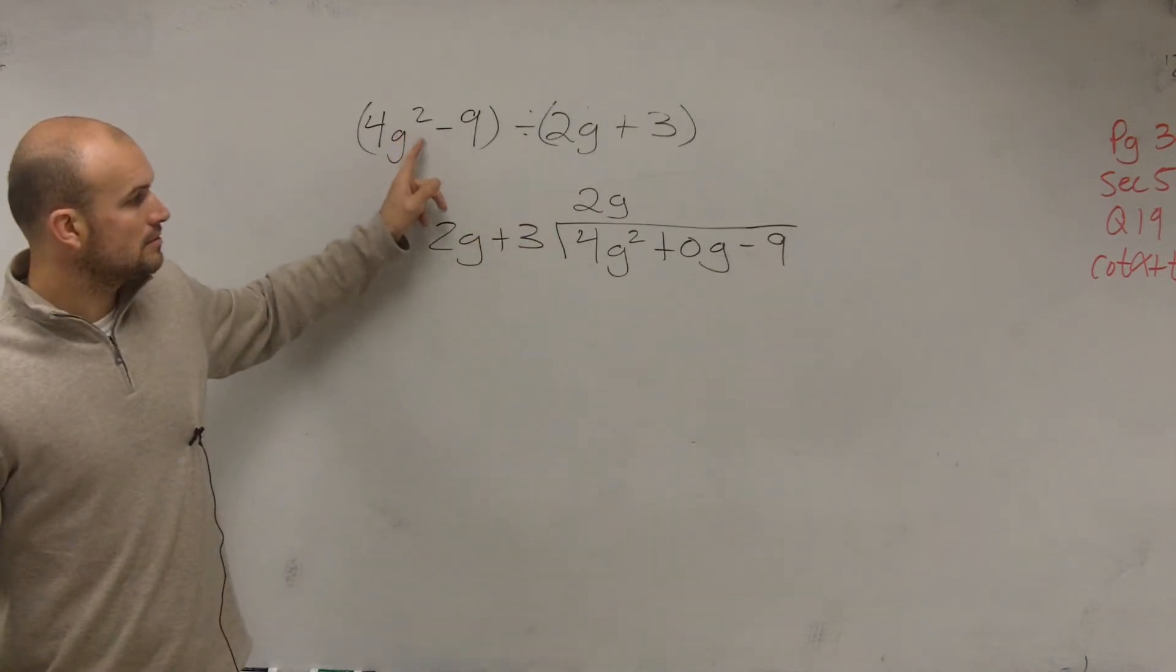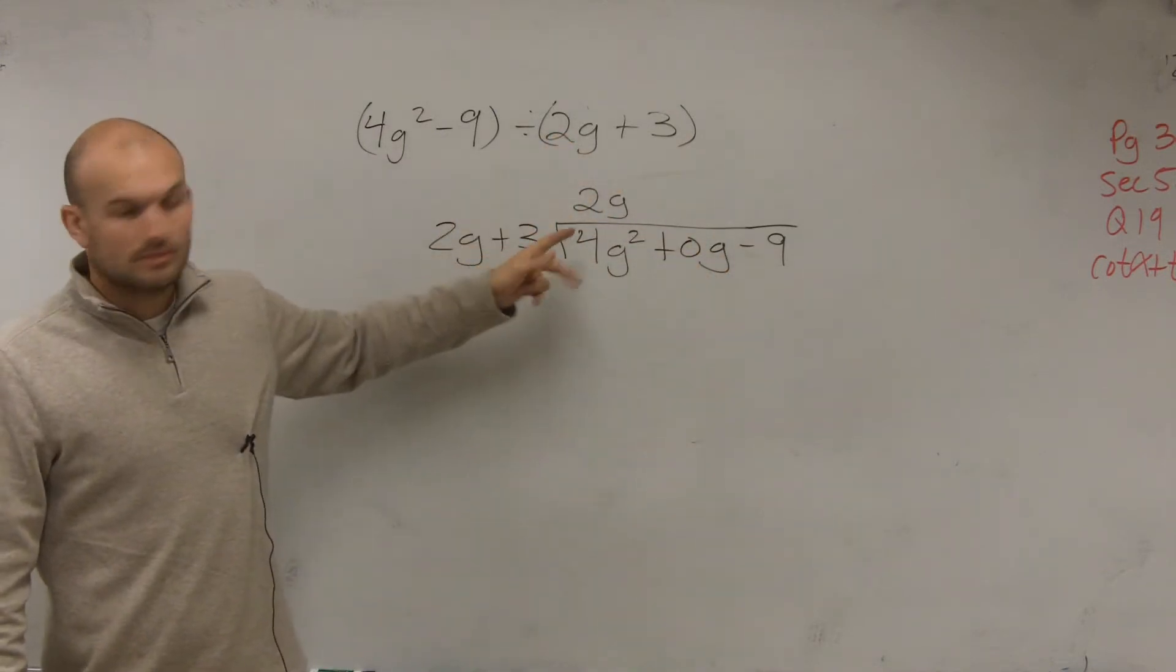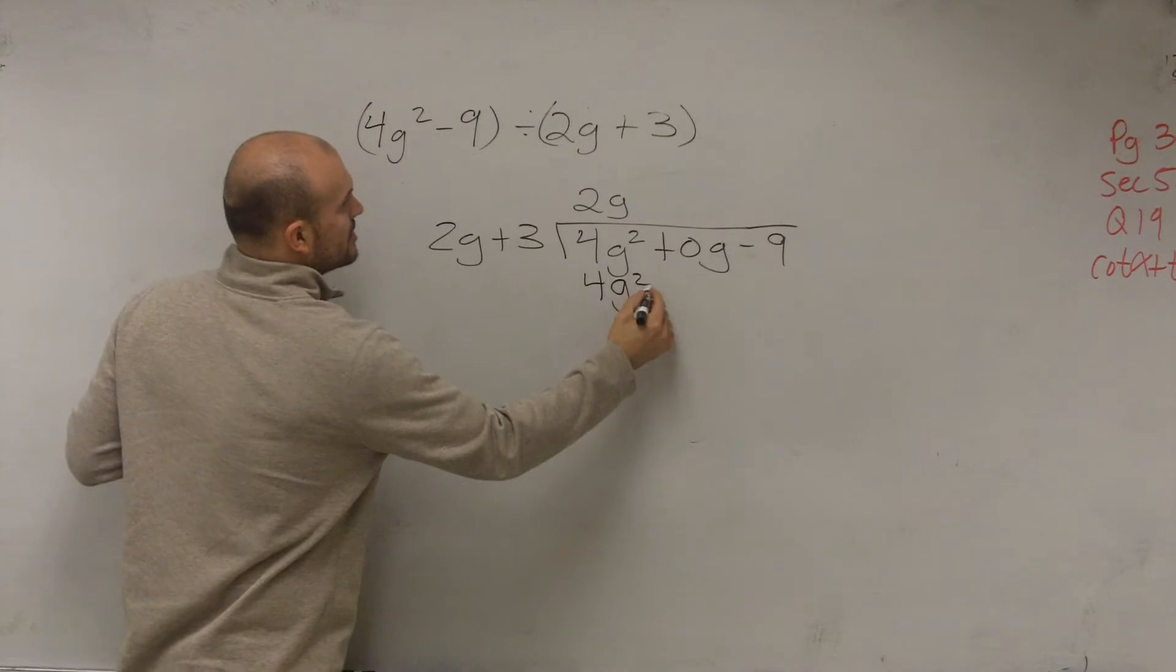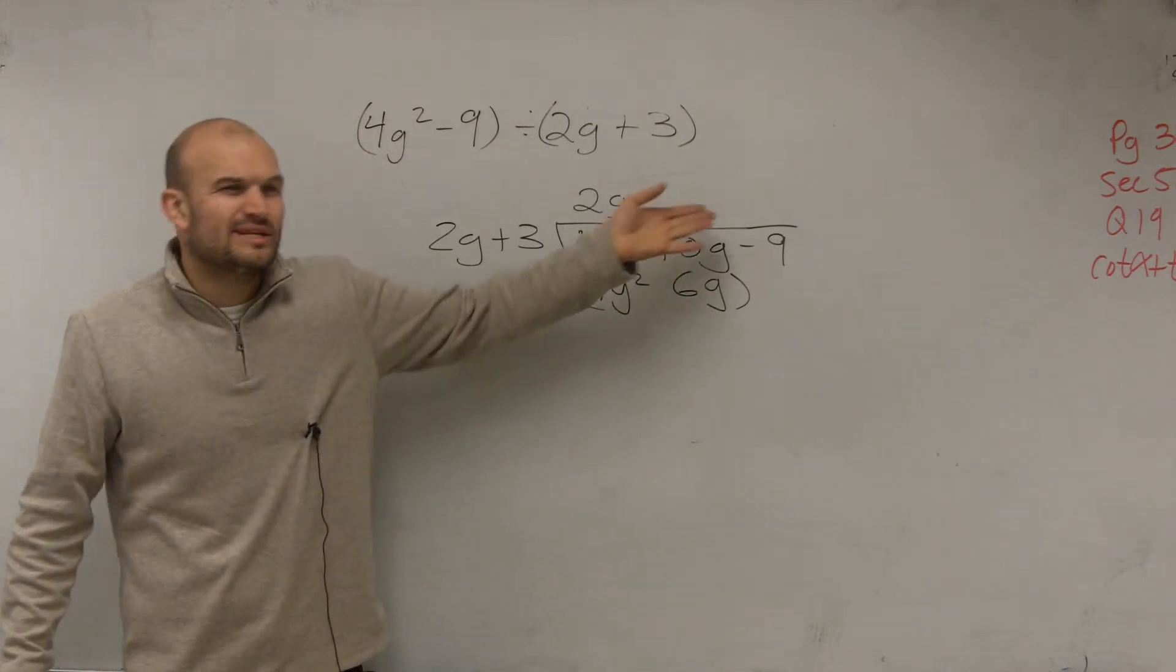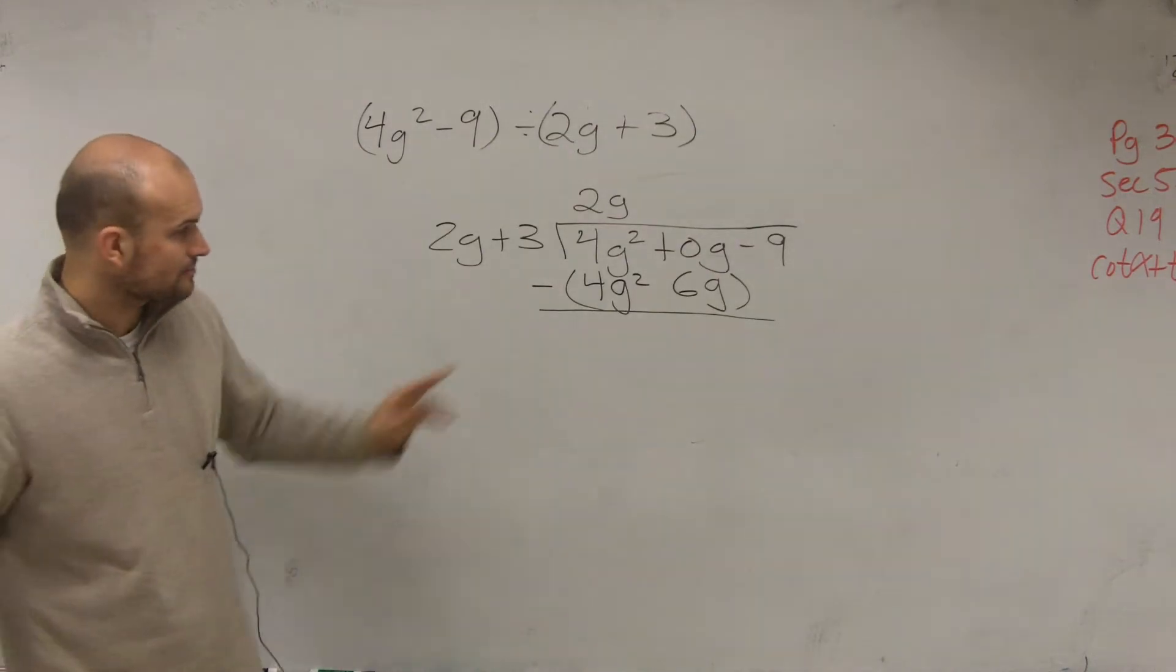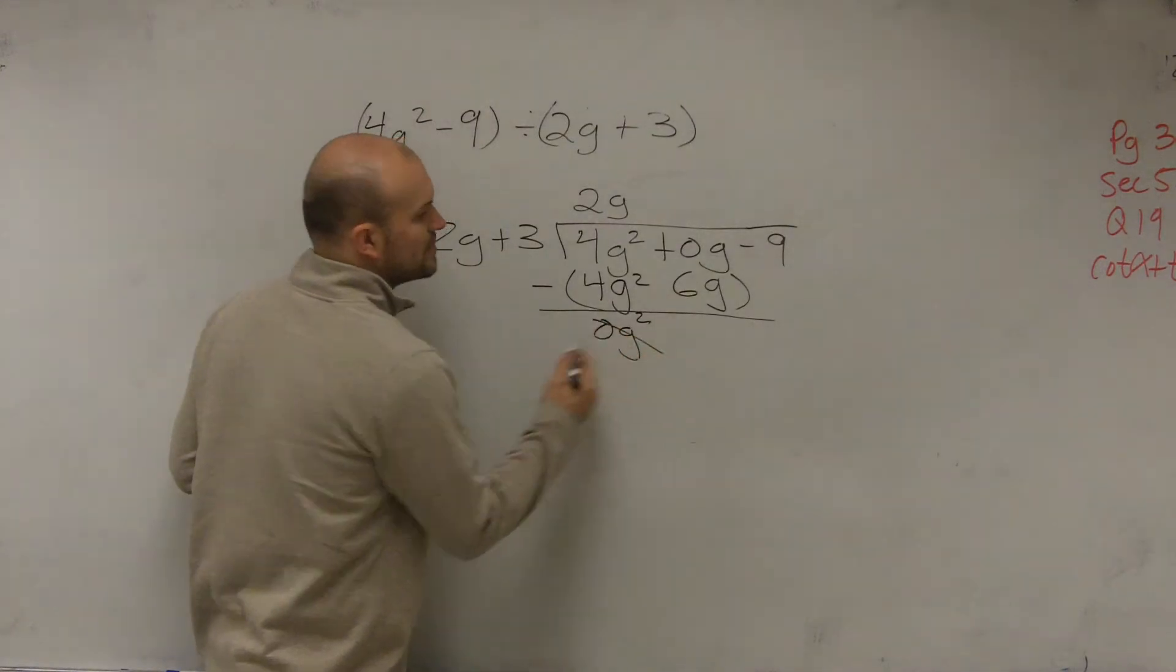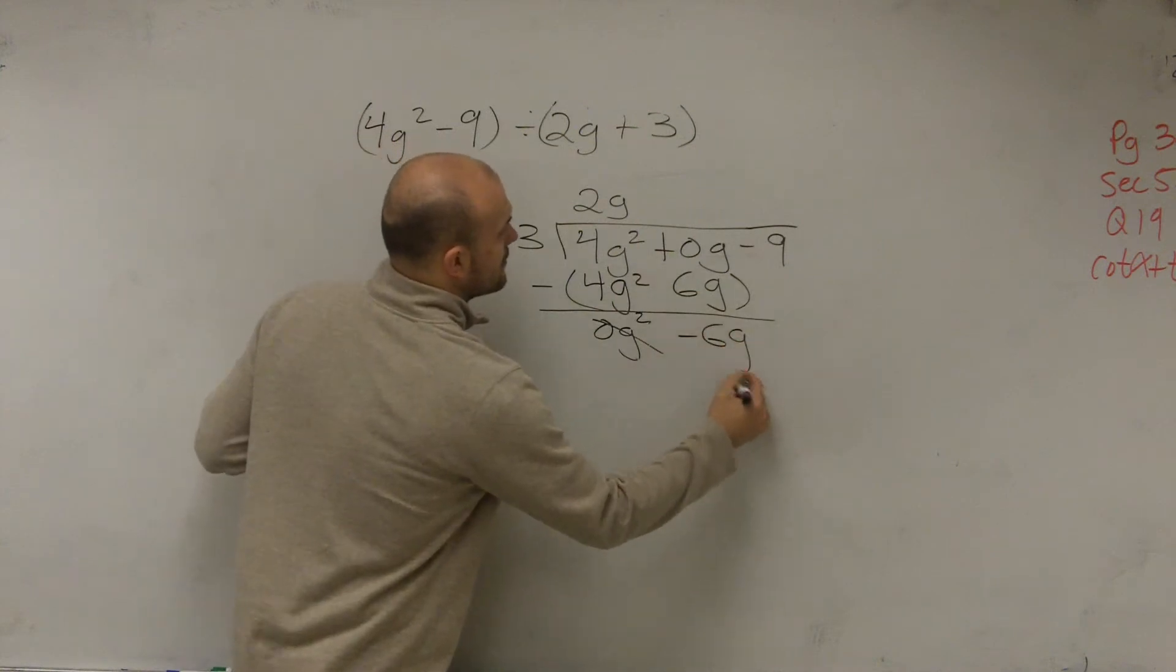Now we're talking about 2g times 2g equals 4g squared. Right. Exactly. So we do 2g times 2g is going to give us 4g squared, and then 2g times 3 gives us 6g. The reason why we like doing the place value is it's just helpful to say 0g minus 6g to help us get our answer. So we put parentheses around the whole second term and then subtract. 4g squared minus 4g squared is 0g squared. 0g minus 6g is a negative 6g.